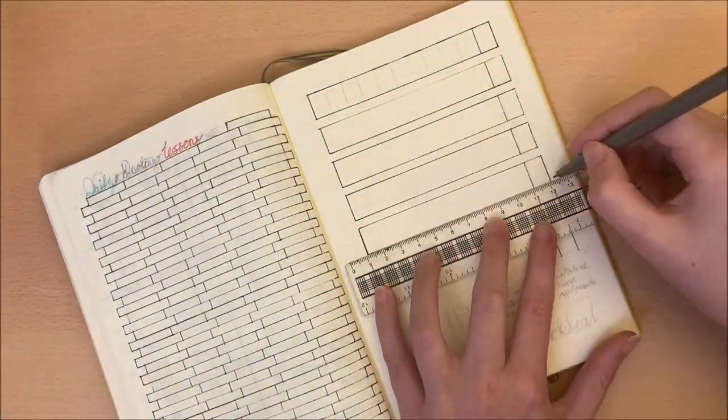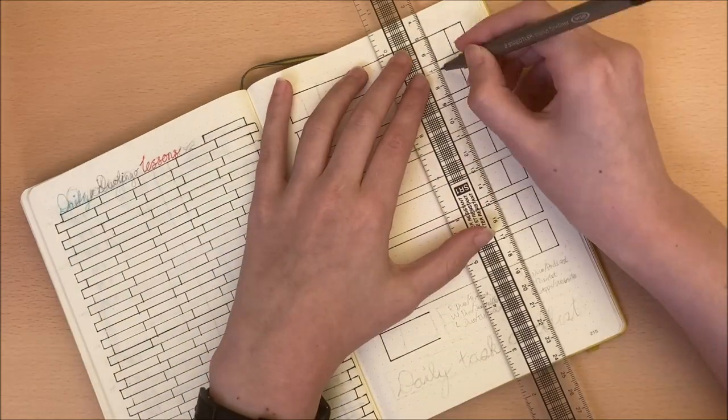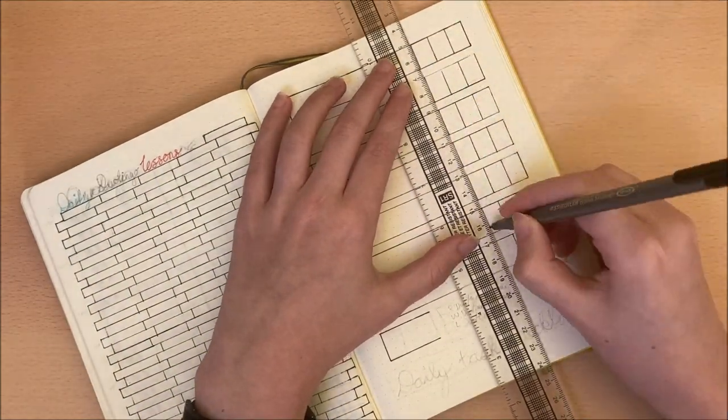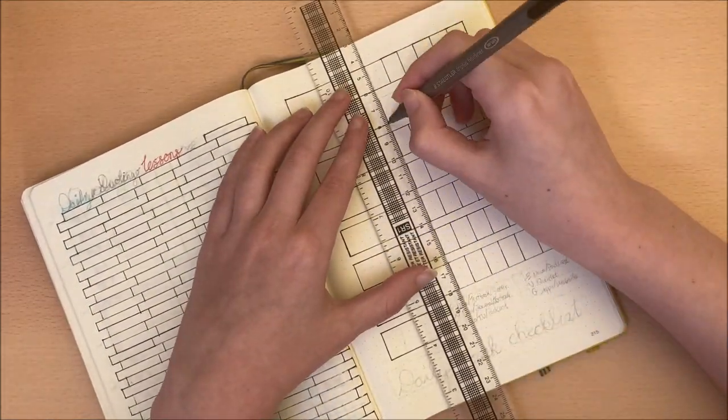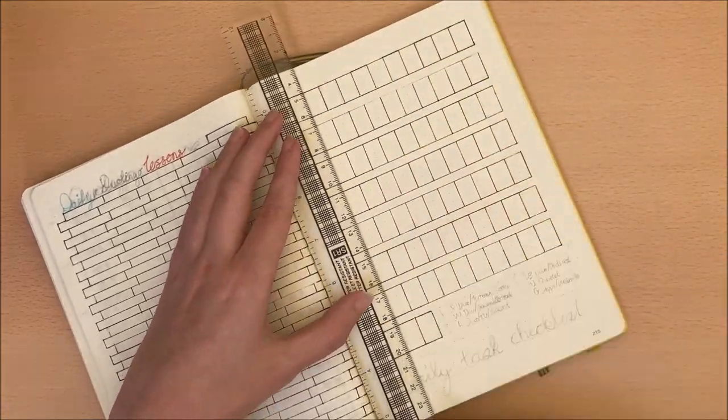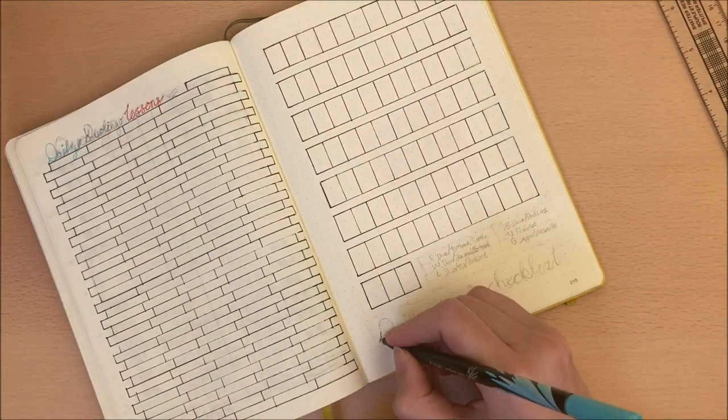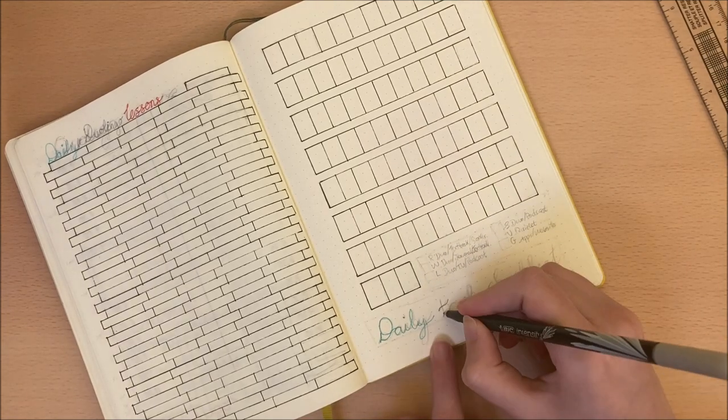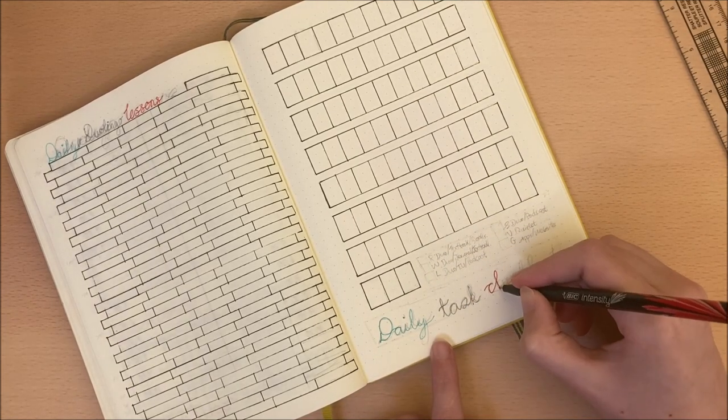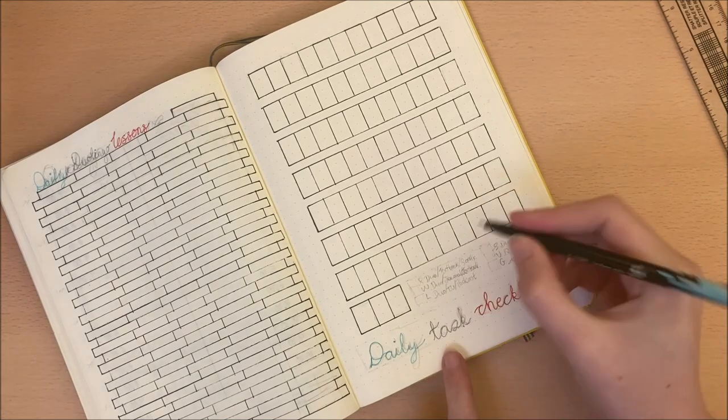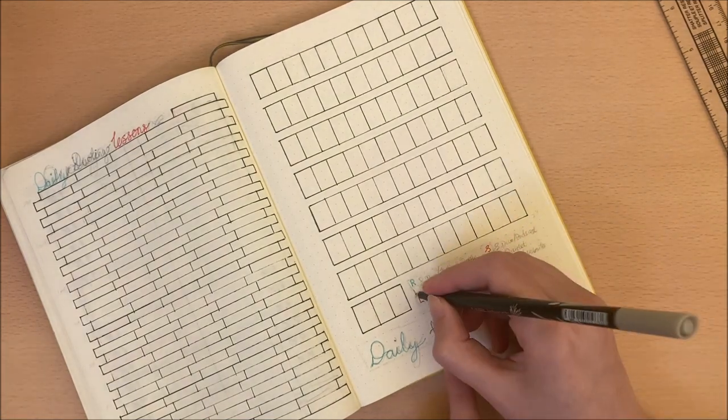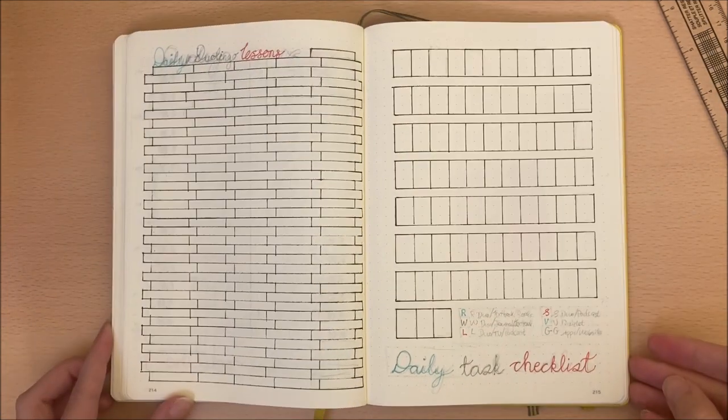My next and final page of this language journal is a daily task checklist. So I divided the page into 80 boxes for each of the 80 days as part of the language challenge, and below I include the key to track how much I read, write, speak and listen in the language as well as when I learn vocabulary and grammar and on what days.